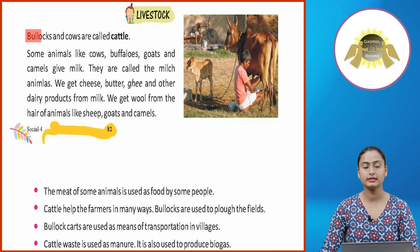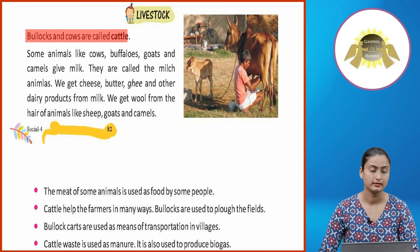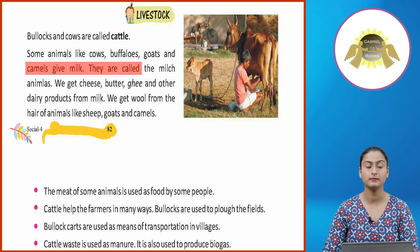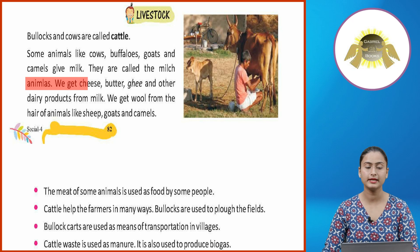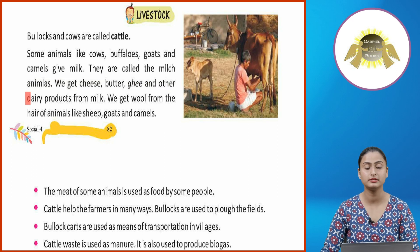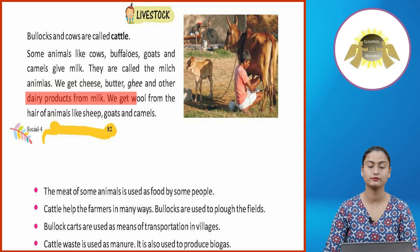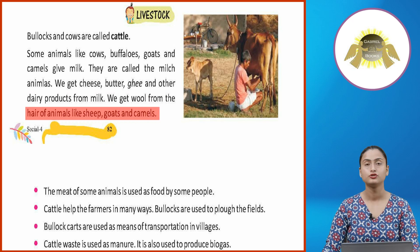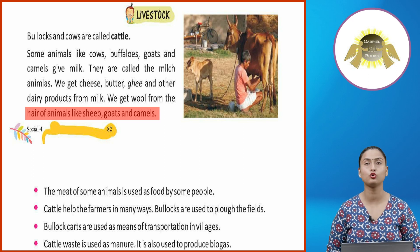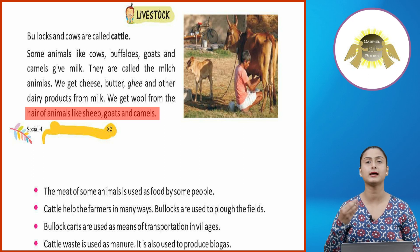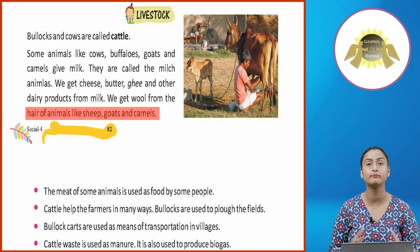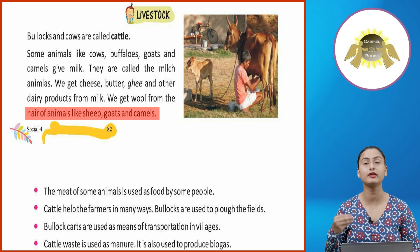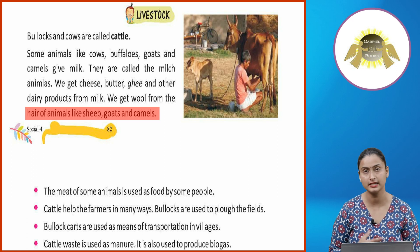Livestock — Bullocks and cows are called cattle. Animals like cows, buffaloes, goats and camels give milk. They are called milch animals. We get cheese, butter, ghee and other dairy products from milk. We get wool from the hair of animals like sheep, goats and camels.